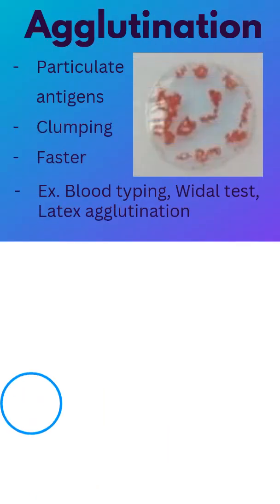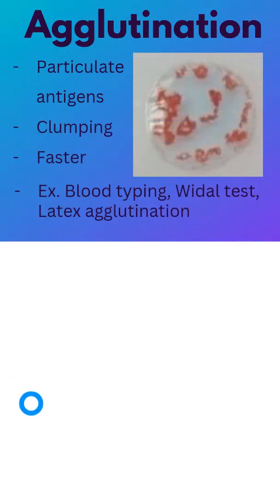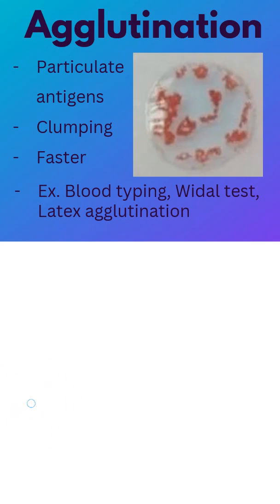Let's compare. Agglutination is faster, uses particulate antigens, and causes clumping. Examples would be blood typing and Widal test.